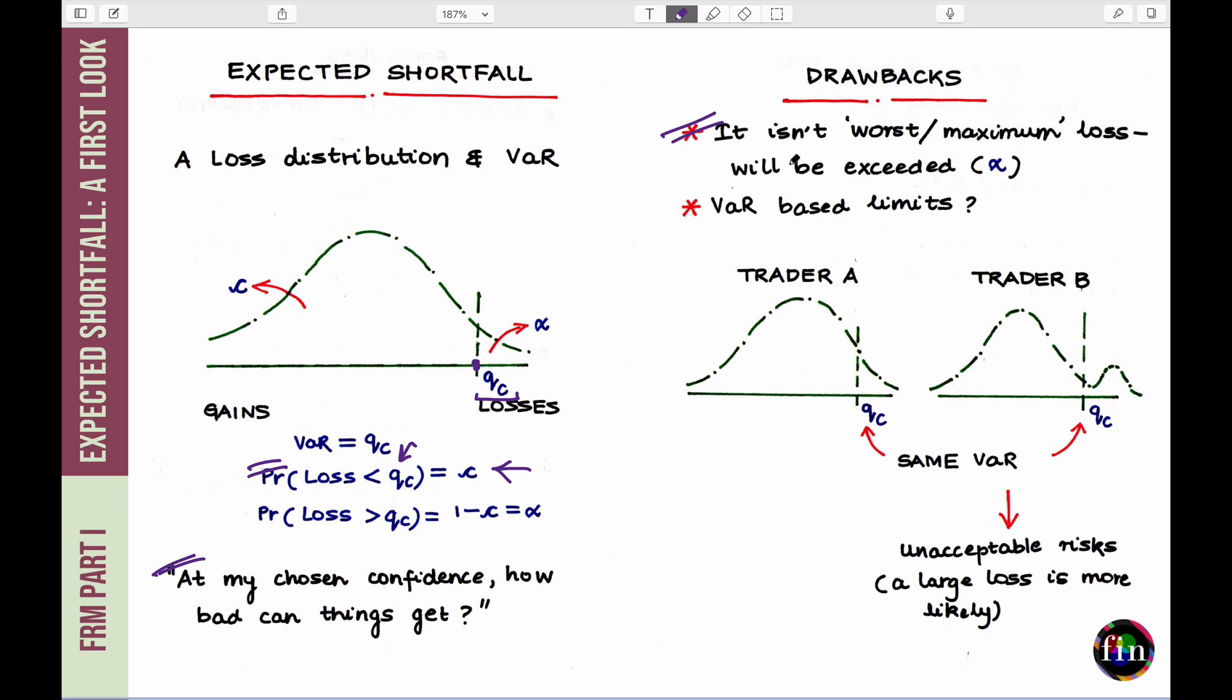Number one, this loss, the VAR number will be exceeded because had it been the worst or the maximum loss, we know that you can't get higher than that. But if you pick a VAR at a certain level of confidence, this number will be exceeded and you are fixing the chance of that happening as the level of significance.